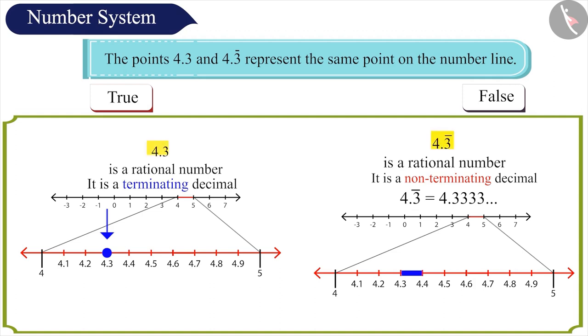That means the numbers represent two different points on the number line. Hence, the given statement is wrong.